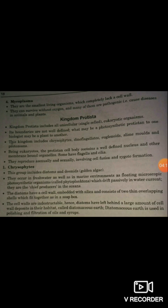The first group of protists is chrysophytes. This group includes diatoms and desmids, also known as golden algae. They occur in freshwater as well as marine environments as floating microscopic photosynthetic organisms called phytoplankton, which drift with water currents.